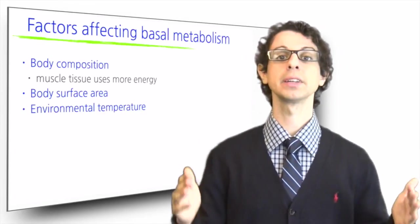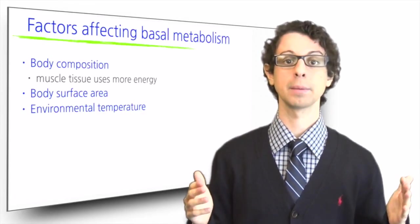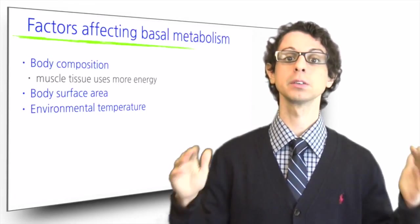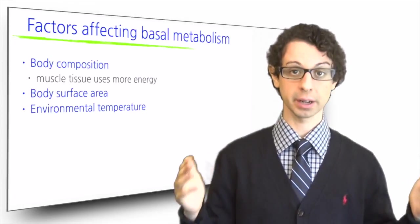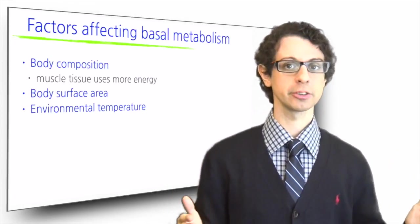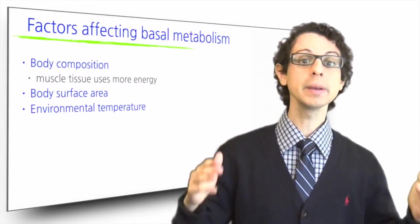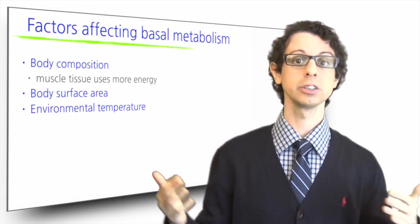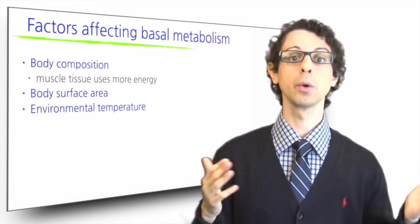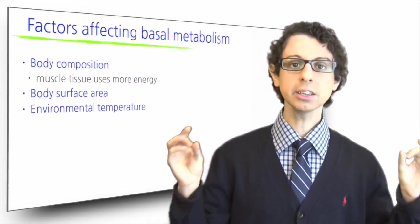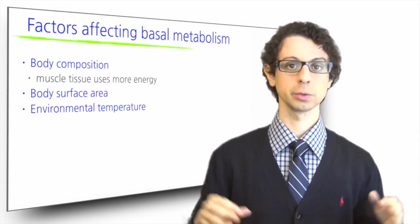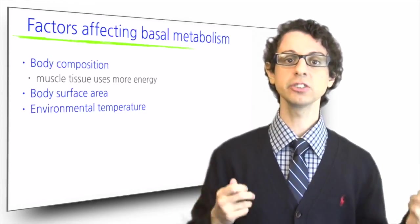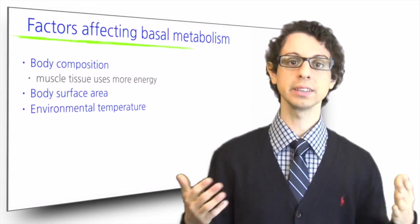The temperature of our environment also affects basal metabolism. Temperature extremes will always increase basal metabolism because we need to spend energy to keep our body temperature stable. Raising our body temperature if it's cold and keeping it cool if it's warm both require spending some energy, just like our air conditioners need electricity both to warm up and to cool down our buildings. Particularly cold conditions will also cause some involuntary physical activity such as increased muscle tone, fidgeting, or shivering, further increasing energy expenditure.